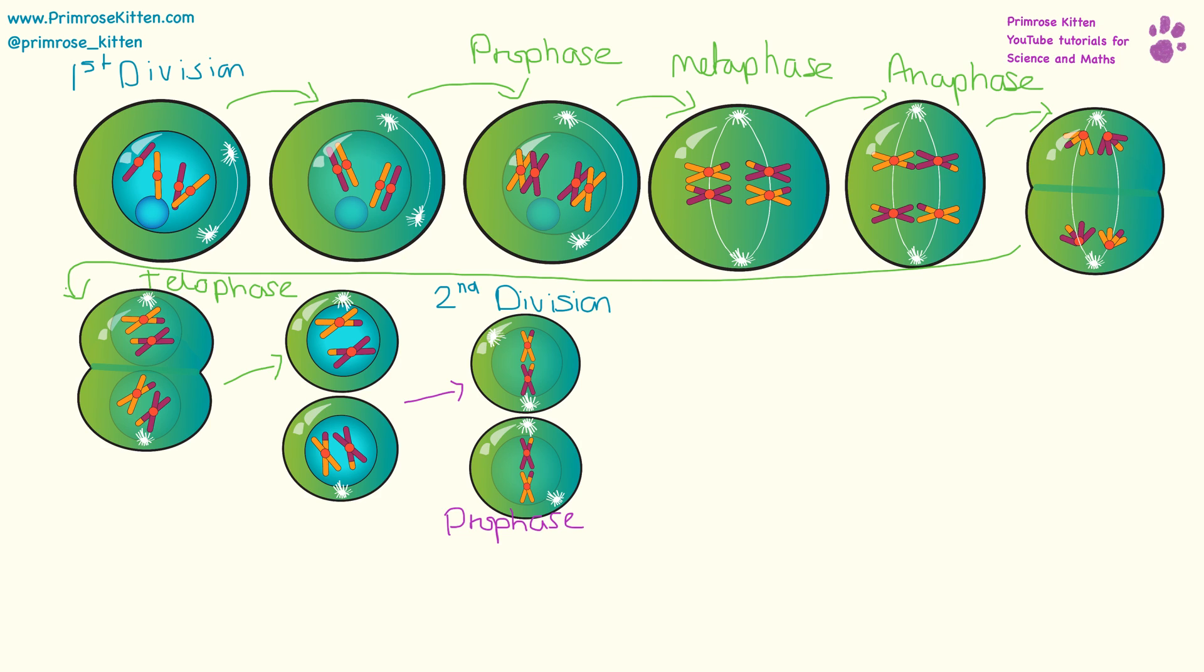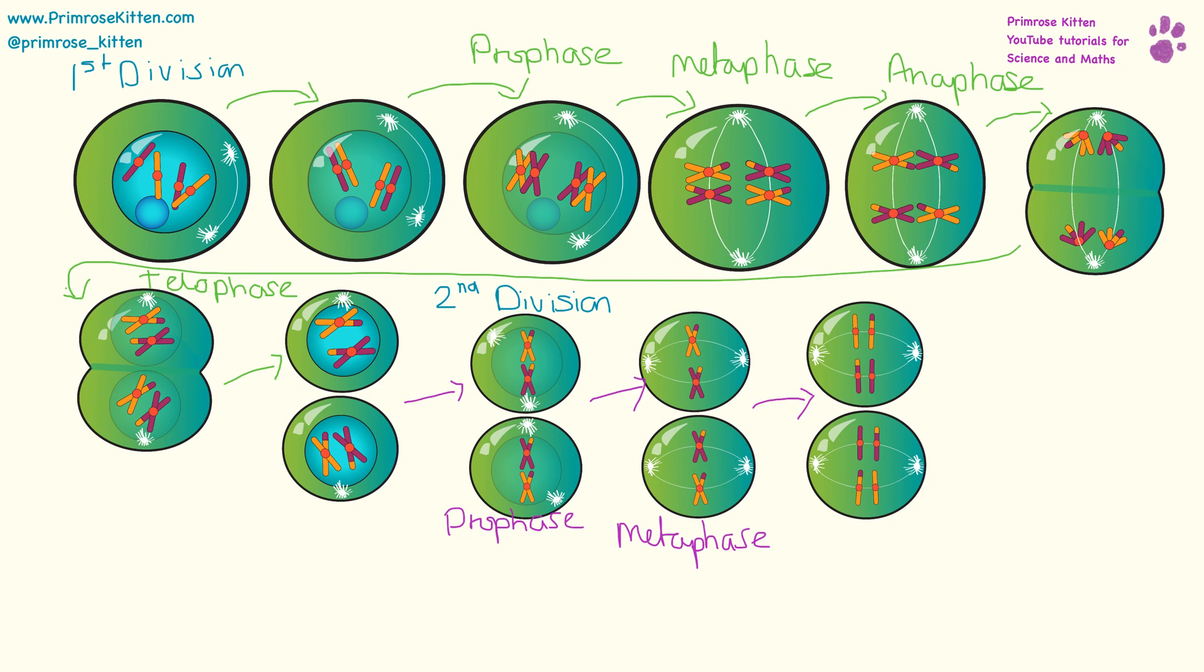Each of these two new cells are going to form a spindle. The chromosomes are again going to get attached to the spindle and line up down the middle. And then the chromosome arms are going to get pulled apart. So each new cell is going to end up with one chromosome arm.